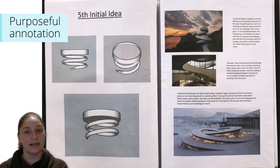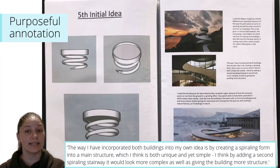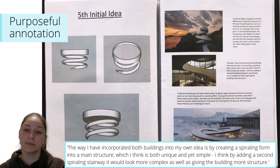Architectural sources inspire the candidate on this slide to draw upon their key characteristics and make informed initial digital designs for a series of buildings. The candidate's annotation is purposeful. They analyse the work of others and their own work, expand on the idea behind the work, and explain connections between images made and found. They state: The way I have incorporated both buildings into my own idea is by creating a spiraling form into a main structure, which I think is both unique and yet simple. I think by adding a second spiraling stairway, it would look more complex as well as giving the building more structure.